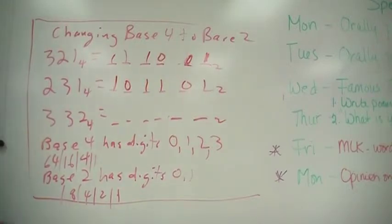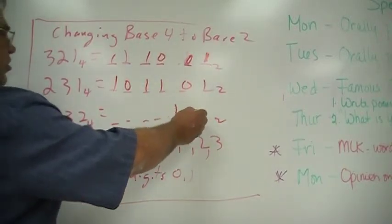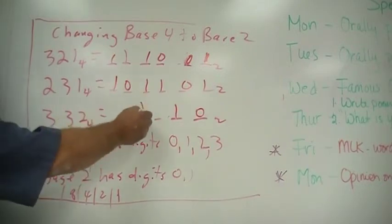For this number, 2 is simply 1, 0, 3 is 1, 1.